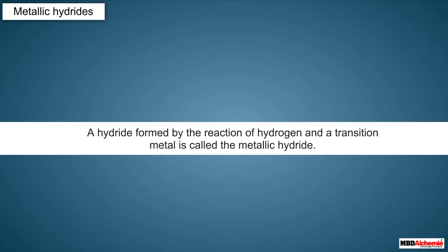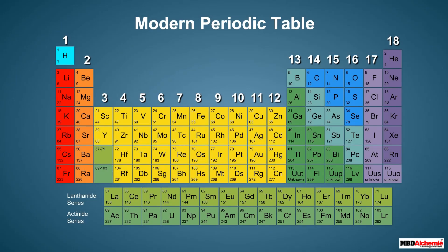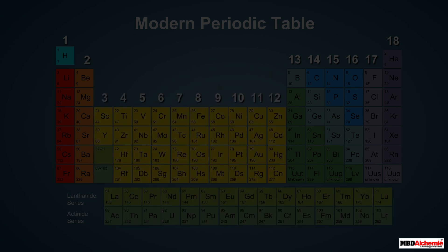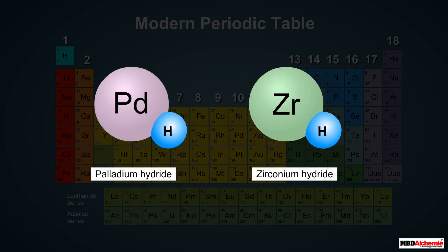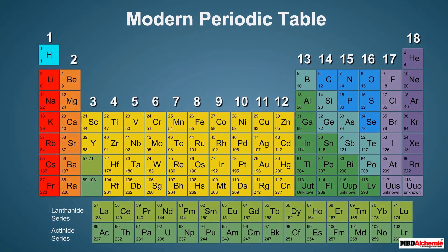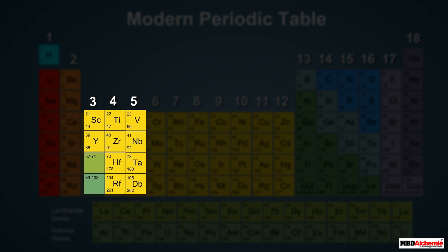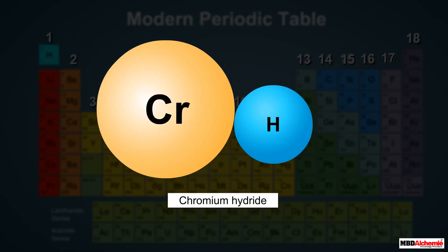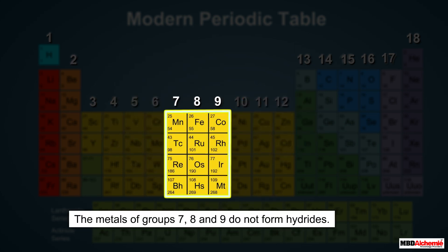If a hydride is formed by the reaction of hydrogen and a transition metal, it is called a metallic hydride. These are formed by most d-block and f-block elements, for example palladium hydride and zirconium hydride. Transition metals of group 3, 4, and 5 readily form hydrides. In group 6, chromium is the only metal that forms a hydride, and the metals of groups 7, 8, and 9 do not form hydrides.